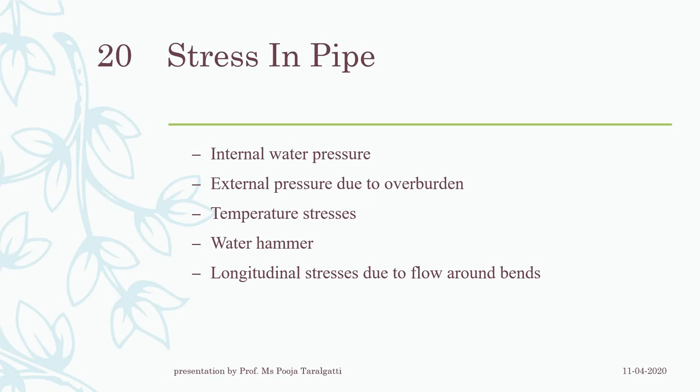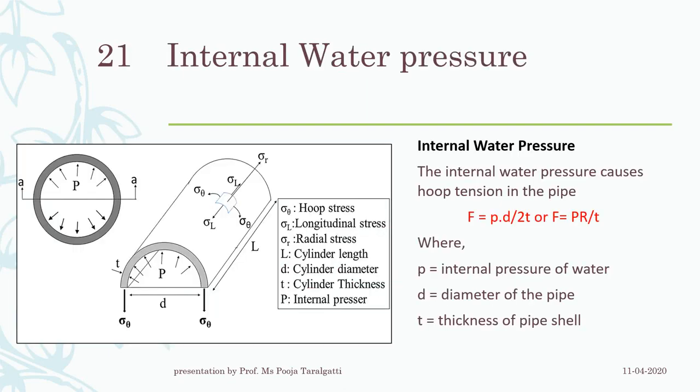There are five different types of stresses observed on a working pipeline: internal water pressure, external water pressure, temperature stresses, water hammer, and stresses due to bends provided in the pipelines.